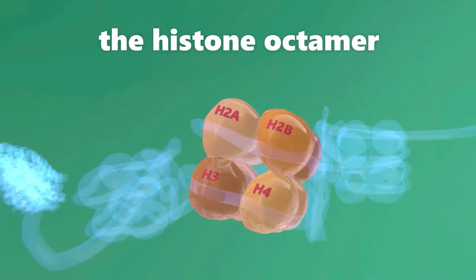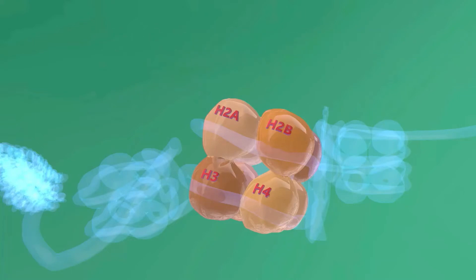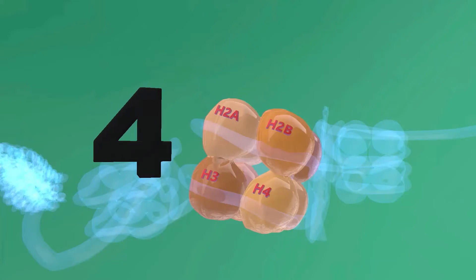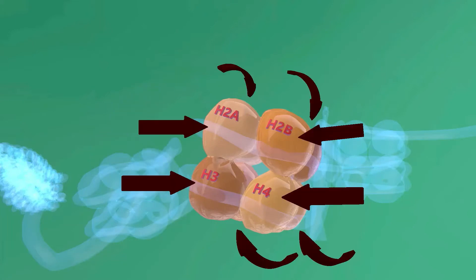The histone octamer consists of H2A, H2B, H3, and H4. Wait a minute, that's not an octamer, those are four molecules. The answer is that these are doubled. There are two of each of these molecules, that's why it's called an octamer.